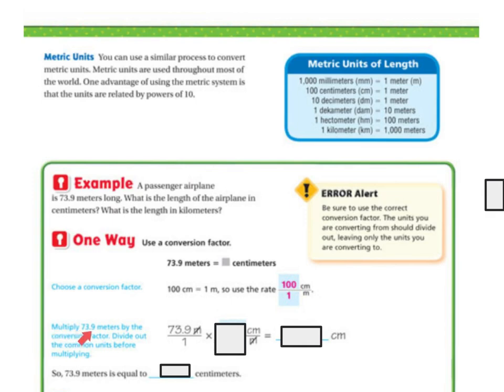Next, we're going to multiply 73.9 meters by the conversion factor, and then divide out the common units before multiplying. So I'm going to use that conversion rate of 100 over 1, and when I do that, I have 73.9 times 100 divided by 1. So 73.9 meters is equal to 7,390 centimeters.